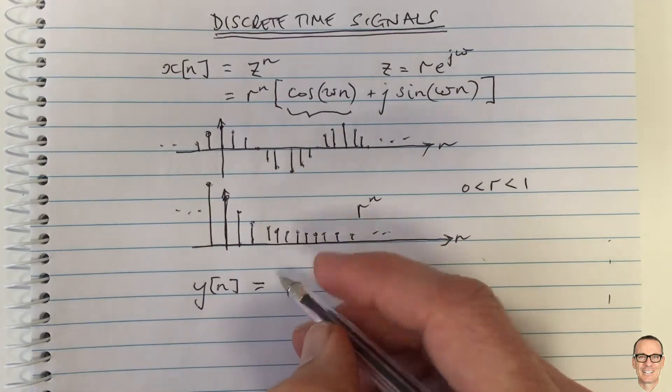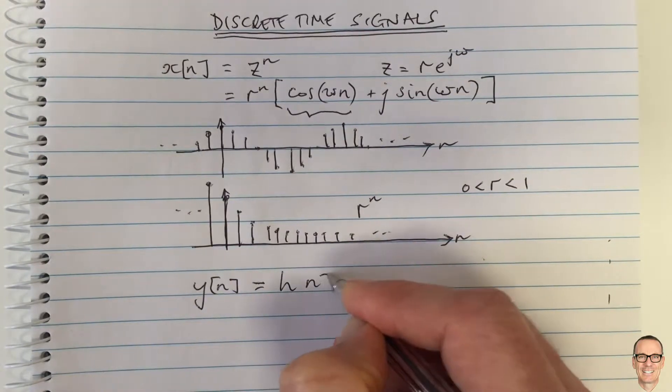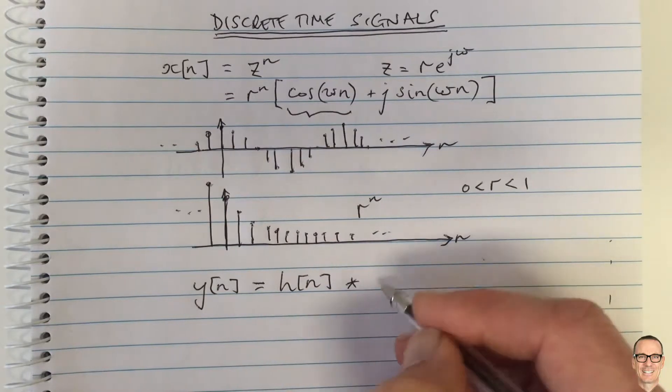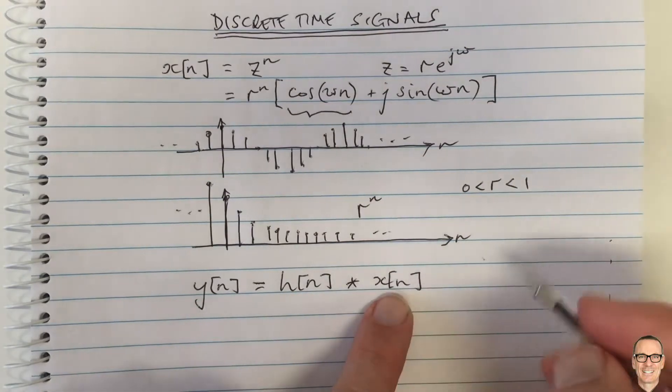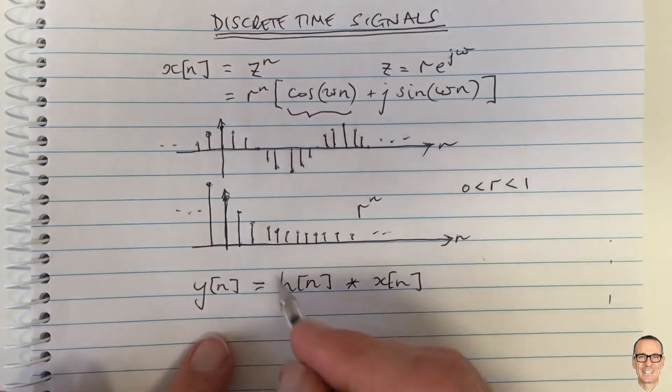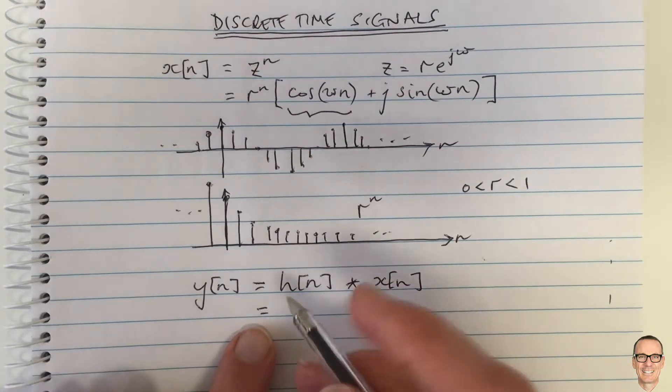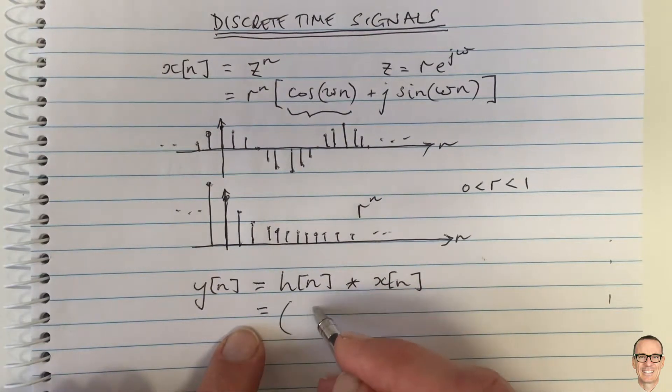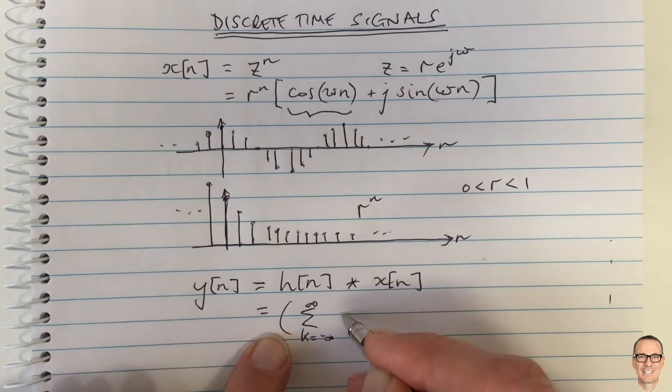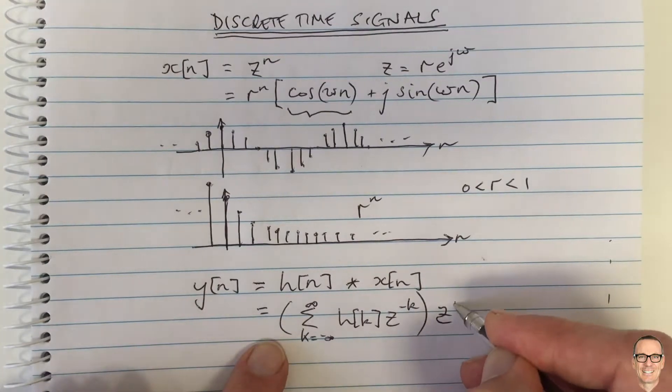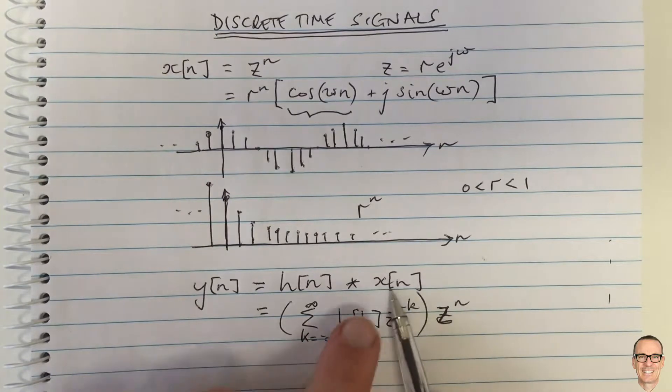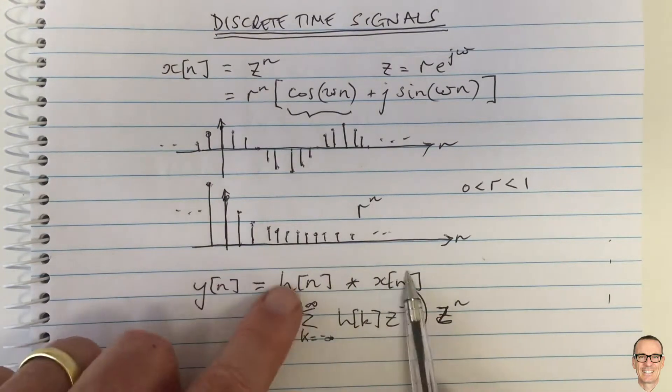signal into a linear system. It's a convolution. If we put x[n] = z^n, then I won't do all the maths, but we can show that this equals from the convolution: sum from k = -∞ to ∞ of h[k] times z^(-k)